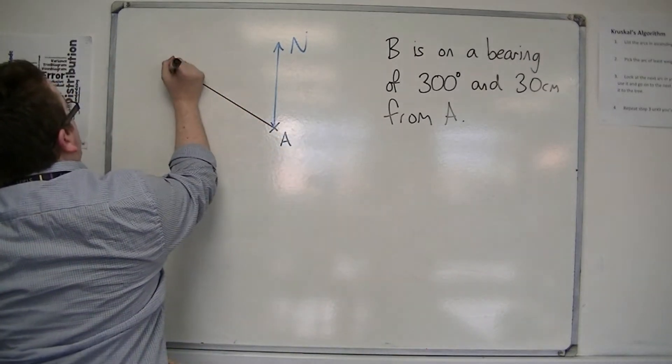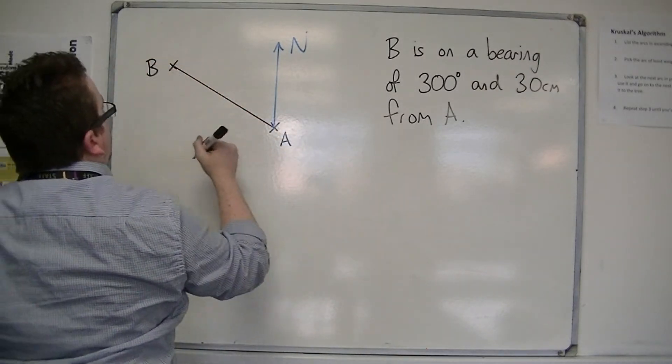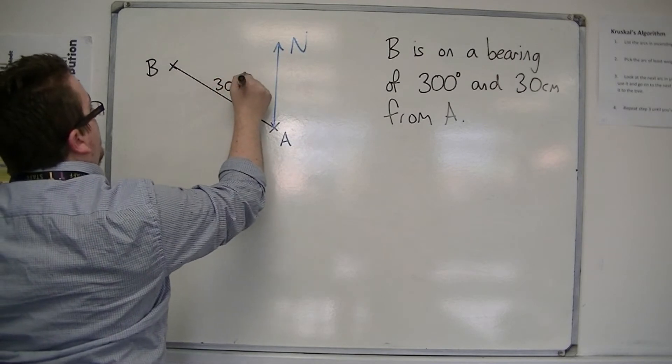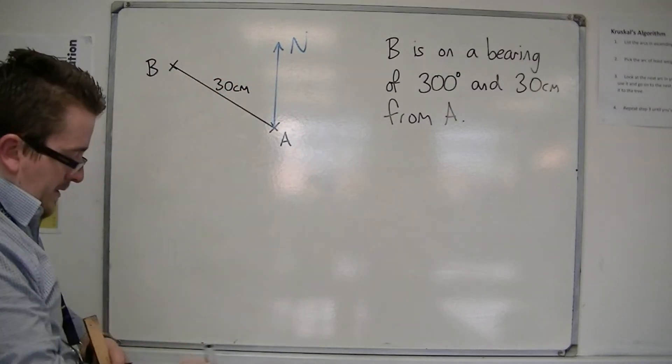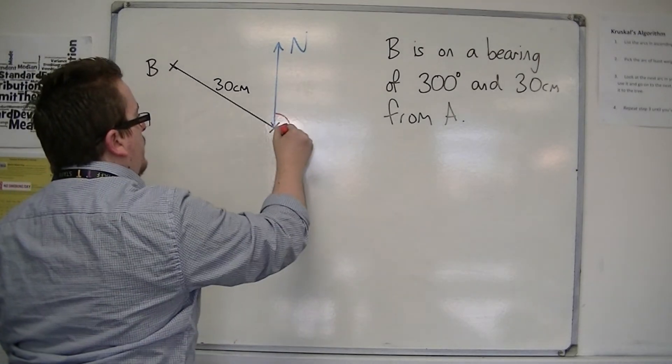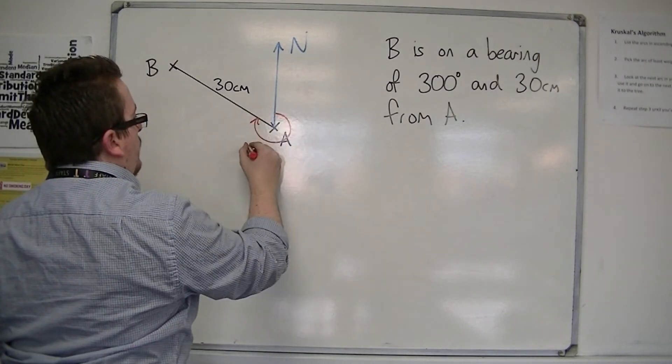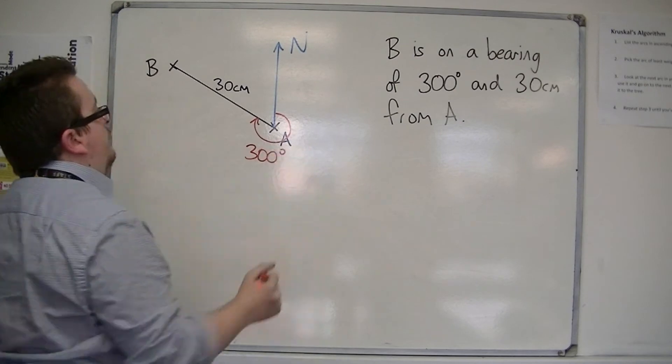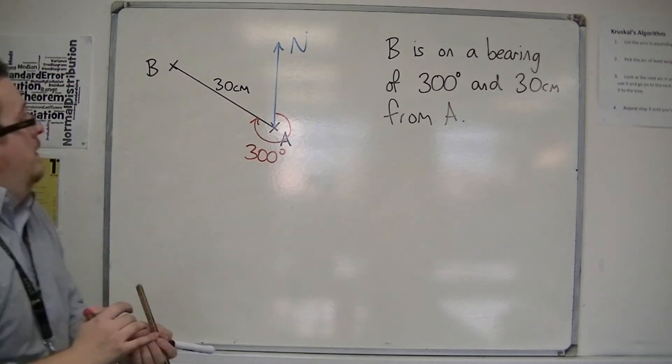Here is B. This is 30 centimetres, and it is on a bearing of 300 degrees from A.